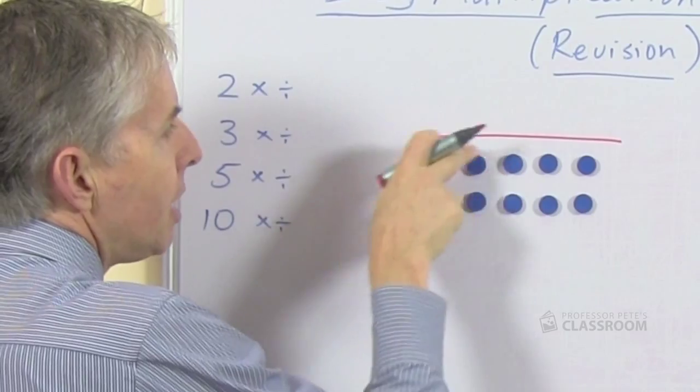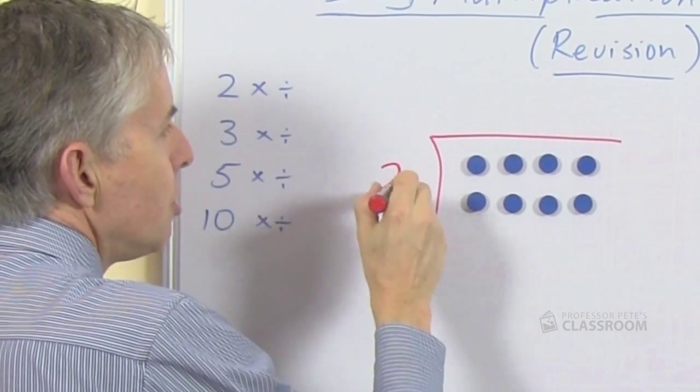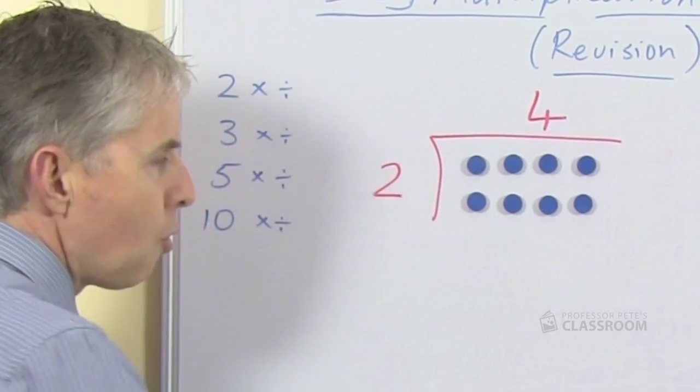On this side we can say how many rows are there? There are 2 rows. How many columns are there? There are 4.